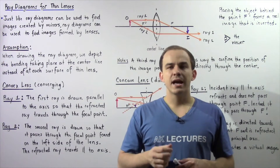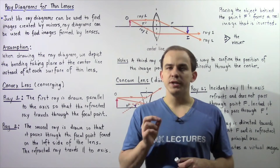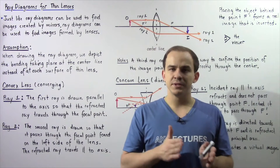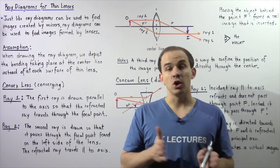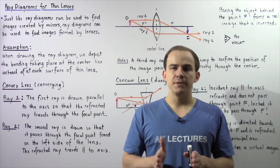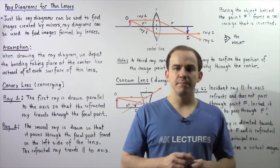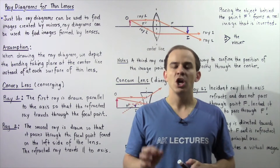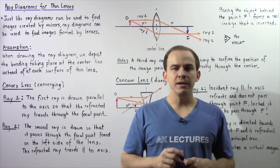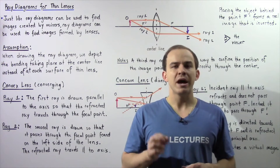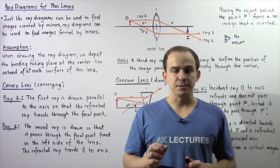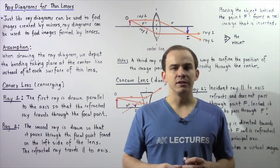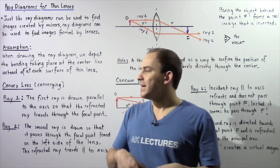In the same exact way that we can use ray diagrams to locate the position of images produced by mirrors, we can use ray diagrams to find where images are produced by thin lenses — by convex and concave thin lenses.